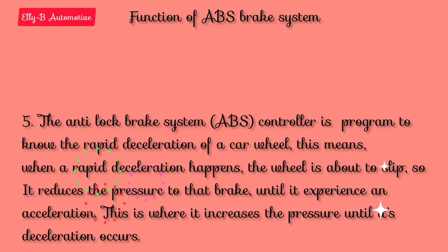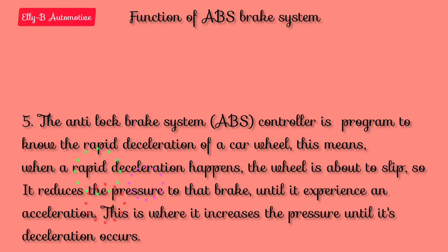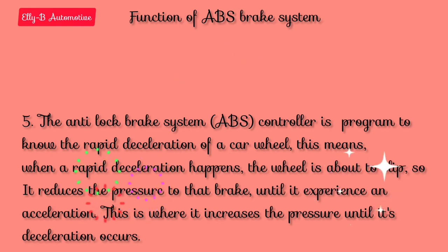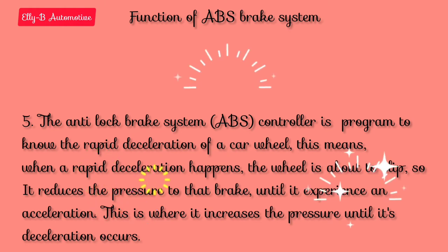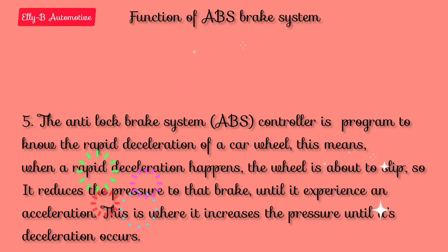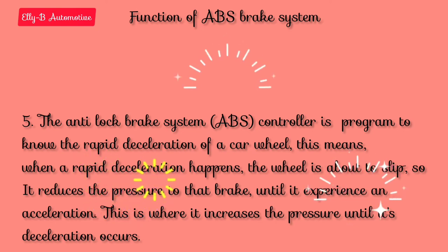The fifth function of the anti-lock brake system is that the ABS controller is programmed to detect rapid deceleration of a car wheel. When rapid deceleration happens, the wheel is about to slip, so it reduces the brake pressure until the wheel experiences acceleration again. Then it increases the pressure until deceleration occurs once more.